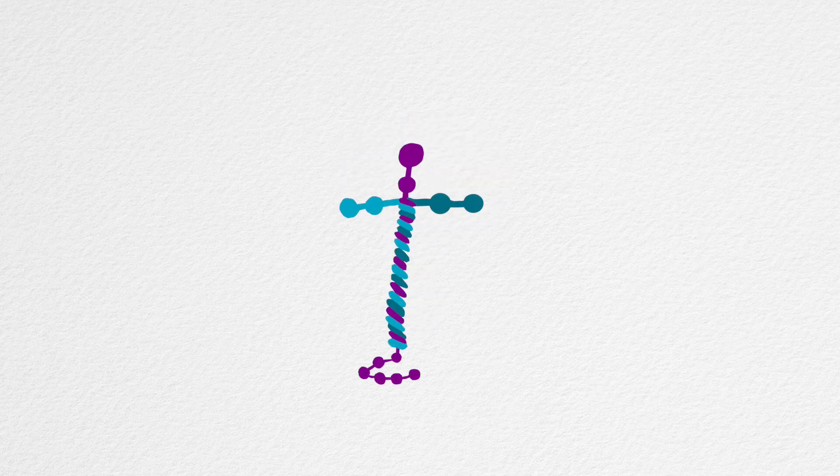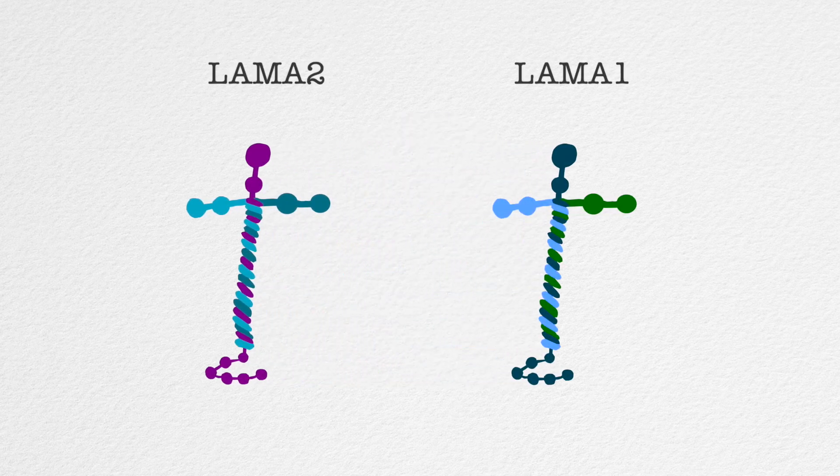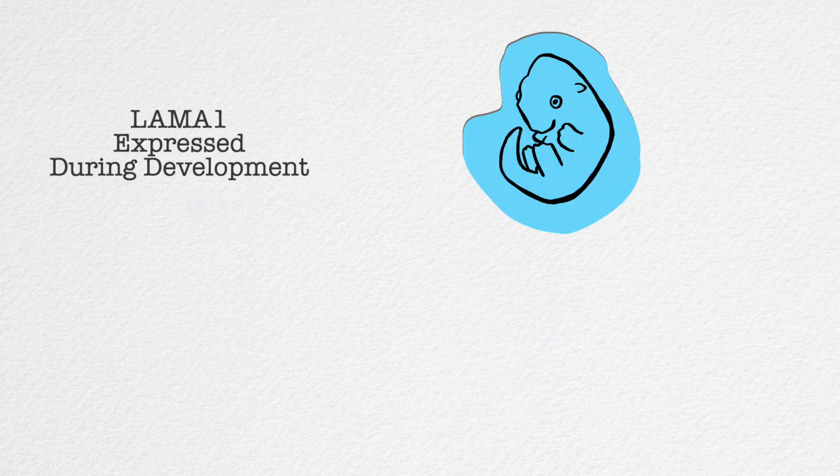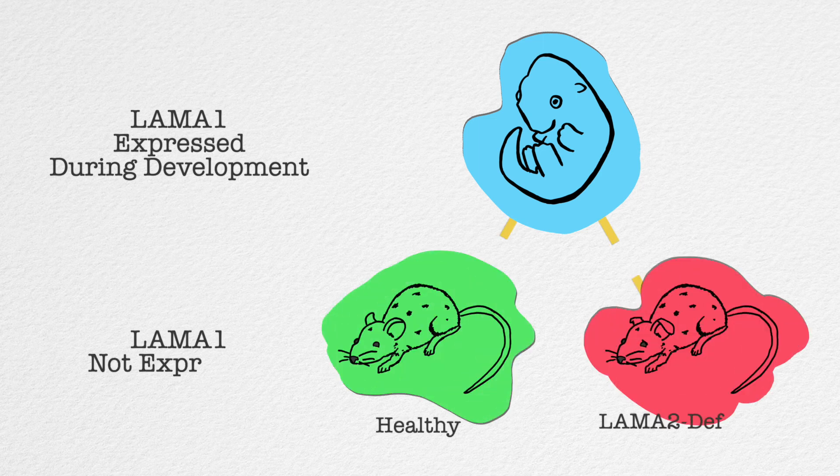It turns out we have a very similar gene called LAMA1, which can actually compensate for the lack of LAMA2. However, LAMA1 is expressed only during development and gets turned off as soon as we're born.